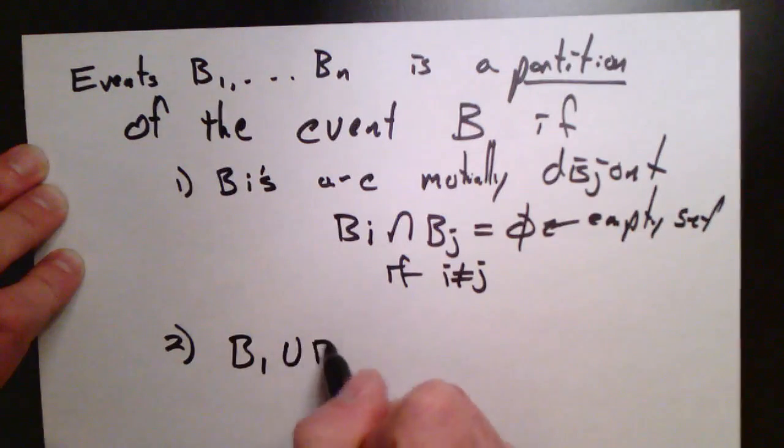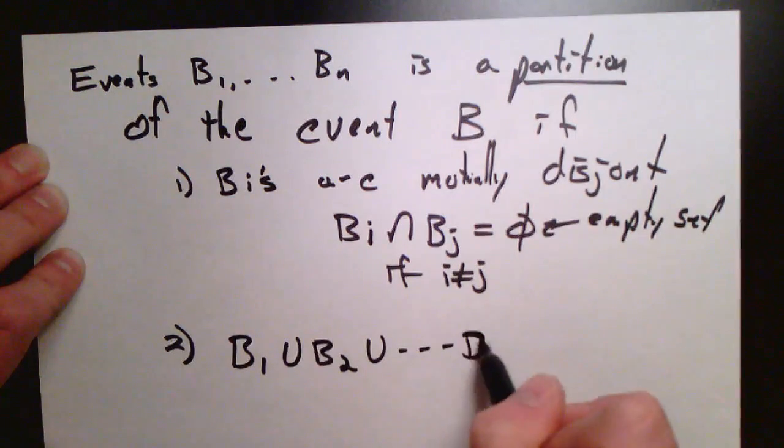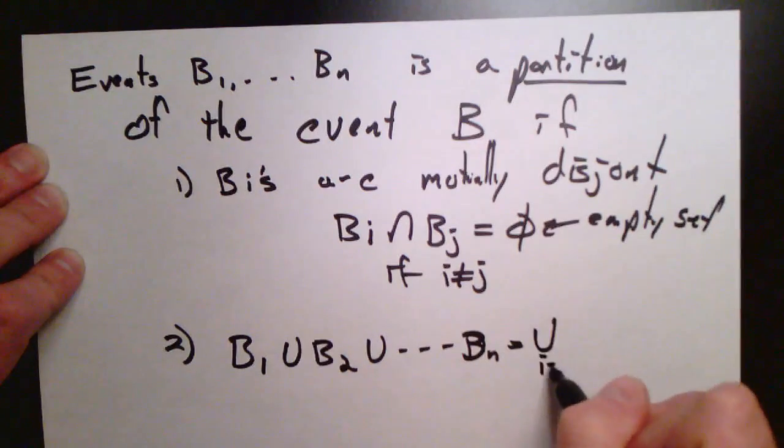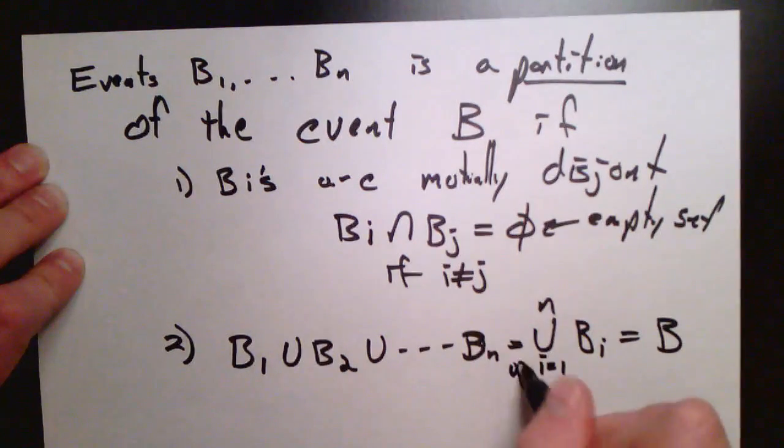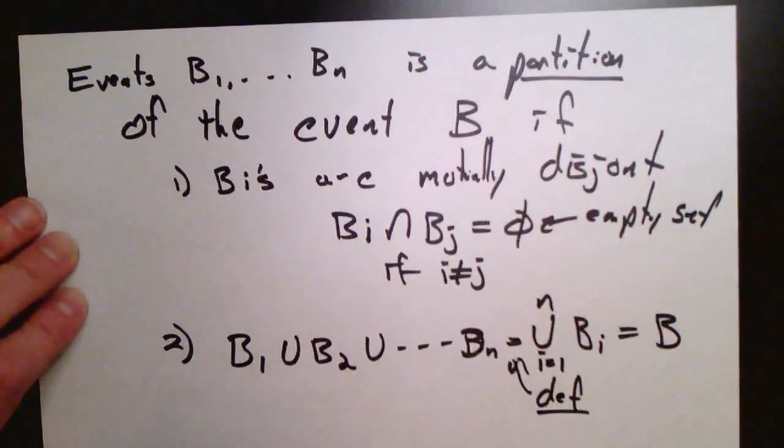And two, their union has to be the other event entirely. So b1 to bn is a partition of an event b if the union of b1 to bn is the event b.